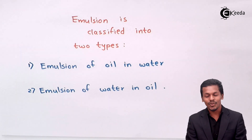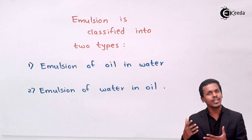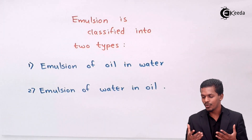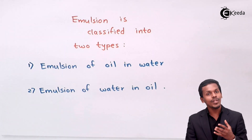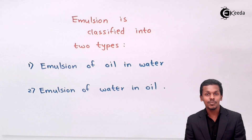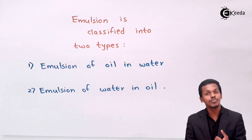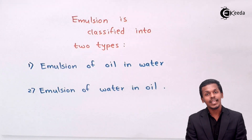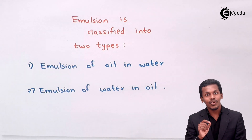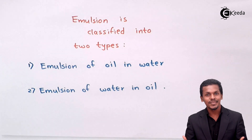Emulsion of water in oil is completely opposite to the first type. In this case, water acts as the dispersed phase while oil acts as the dispersed medium. For example, cod liver oil is an example of emulsion of water in oil.